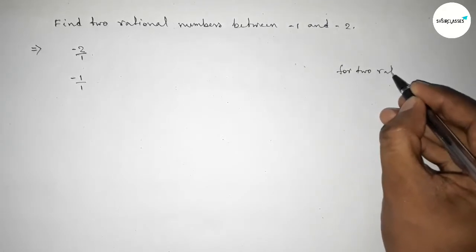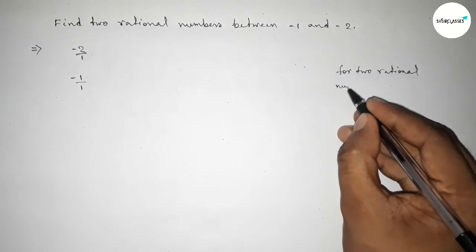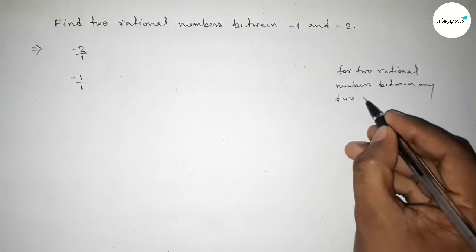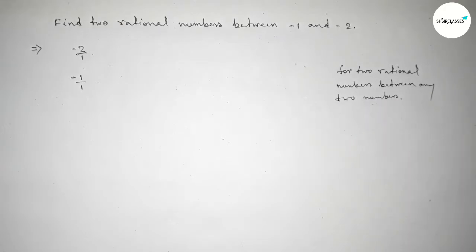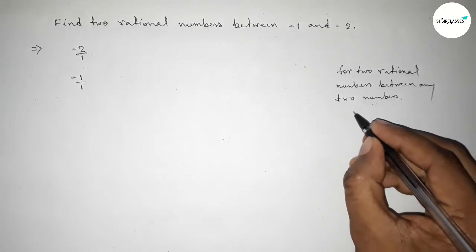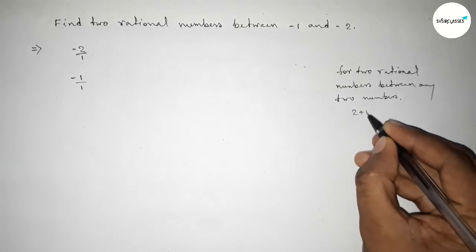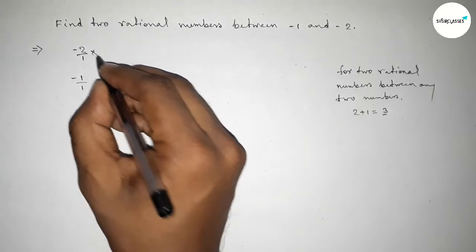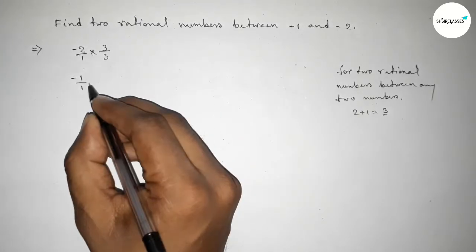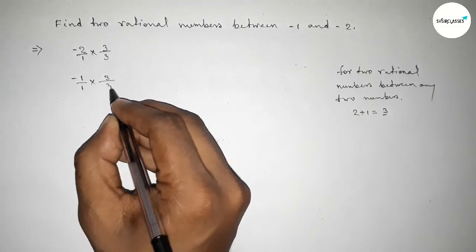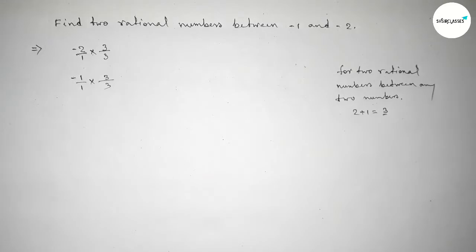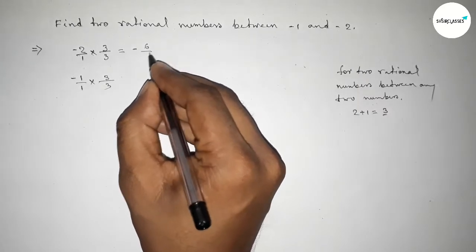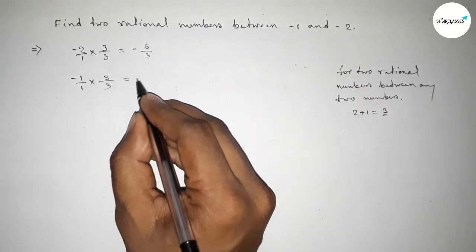For two rational numbers between any two numbers, we can follow this method. We should multiply both numbers by 2 plus 1 equal to 3, so we should multiply by 3 with both numbers up and down by this way. So multiplying here up and down 3, they're equal to minus 6 over 3 and this is minus 3 over 3.